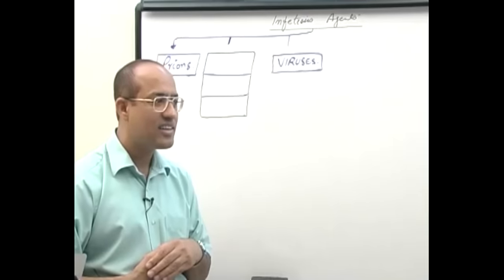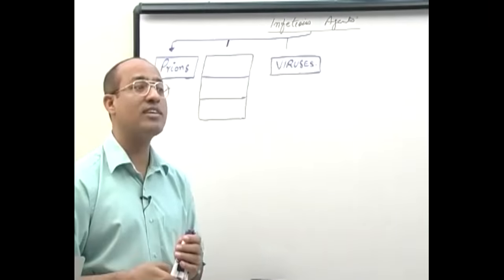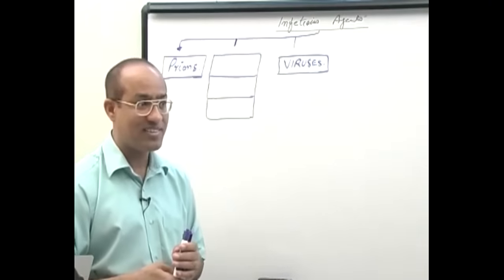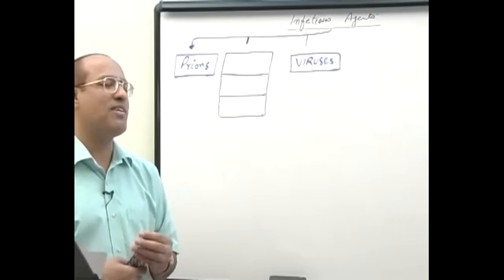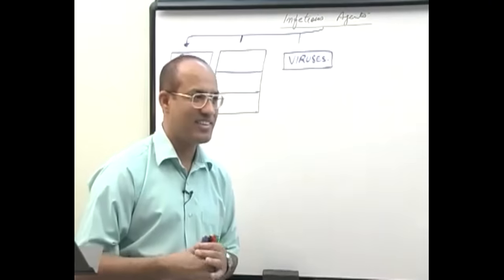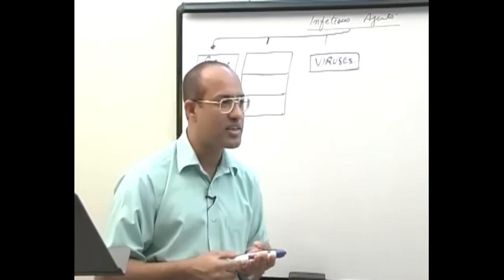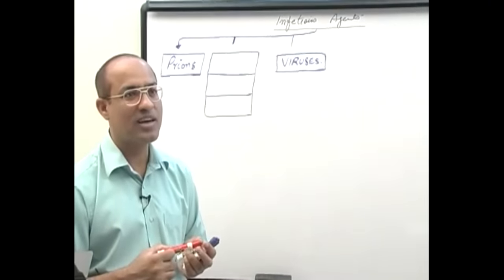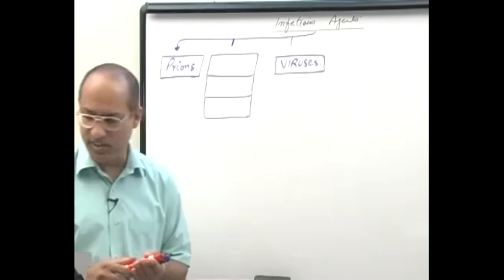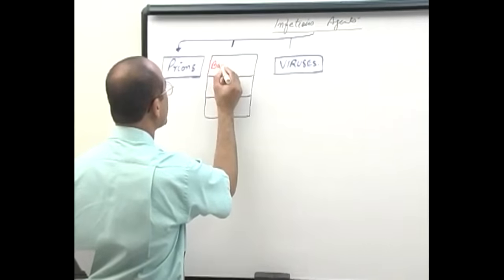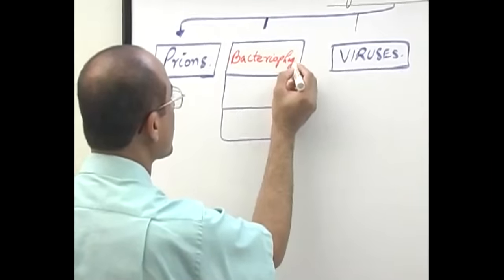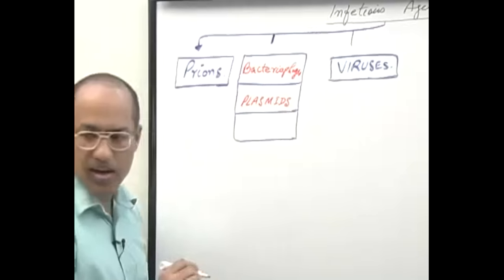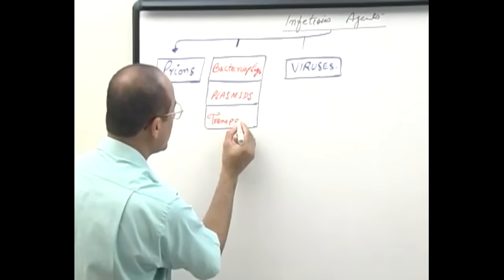Some agents are infectious directly or indirectly — they can produce infectious problems, virulence, or disease. Toxins are not themselves infectious agents. Have you heard of bacteriophages, plasmids, and transposons? These can act as infectious agents, and I will explain how.